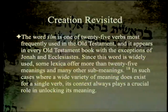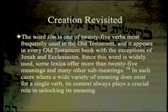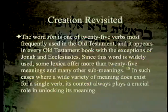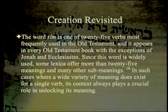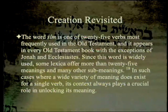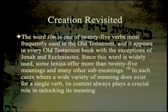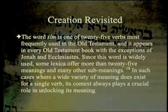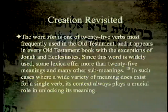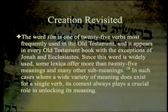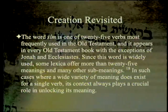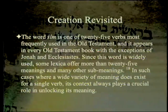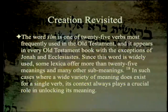The word 'sim' is one of 25 words most frequently used in the Old Testament and appears in every Old Testament book with the exception of Jonah and Ecclesiastes. Since this word is widely used, some lexica offer more than 25 meanings and many sub-meanings. Its nuances are highly context-dependent, but the core idea is there. In such cases where a wide variety of meanings exists for a single verb, context always plays a crucial role in unlocking its meaning.